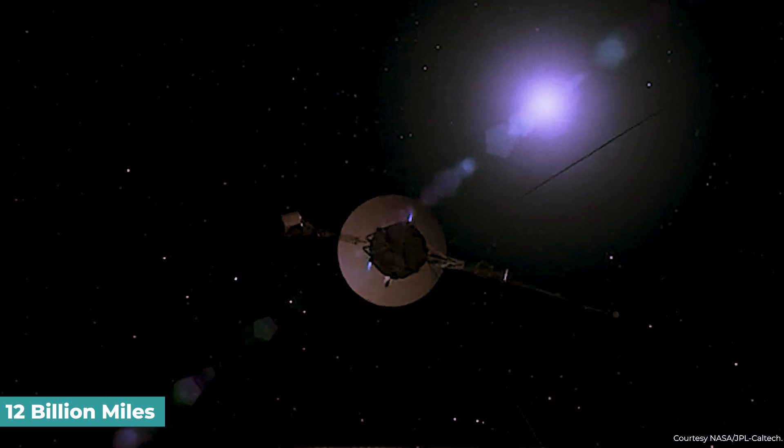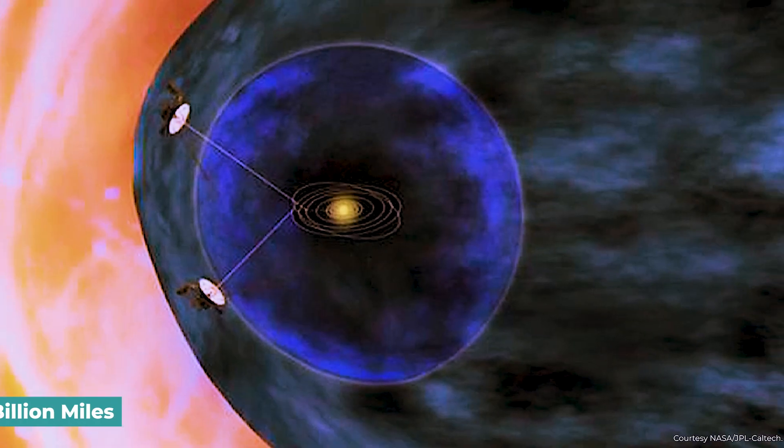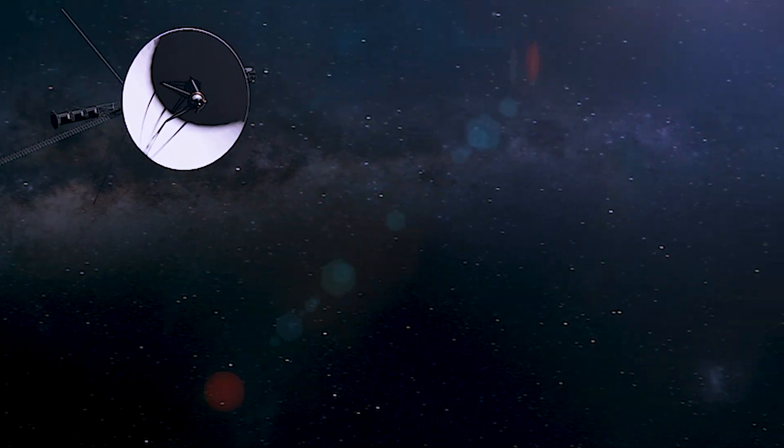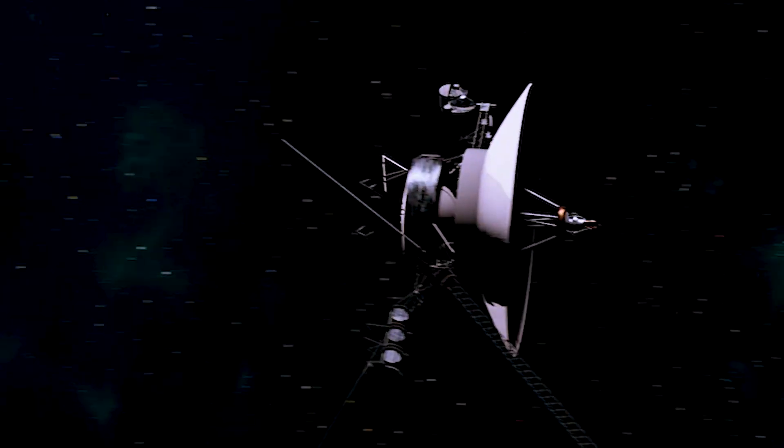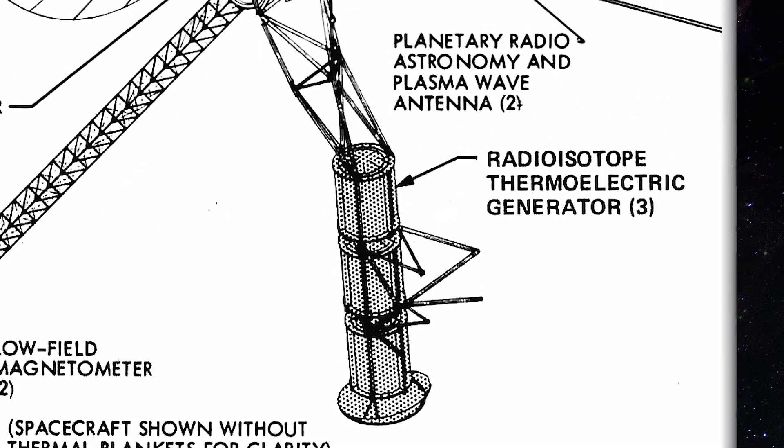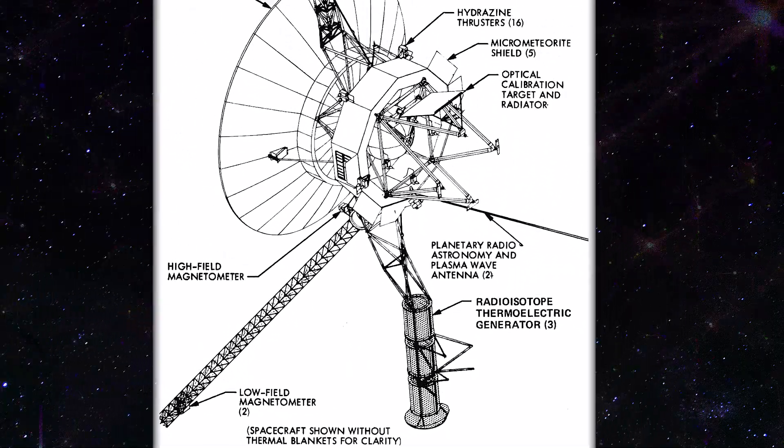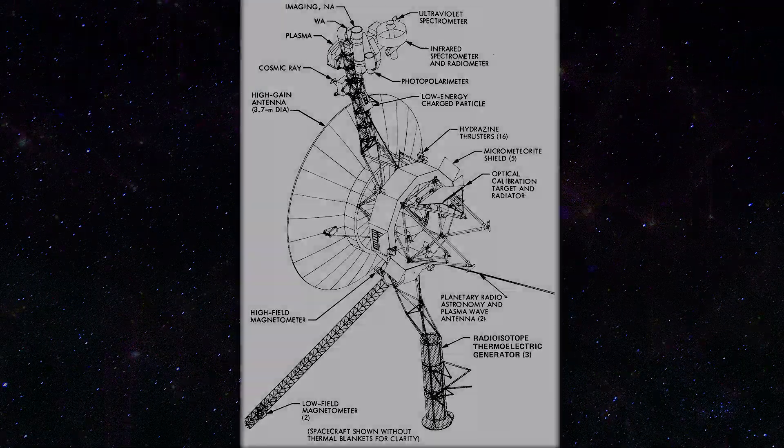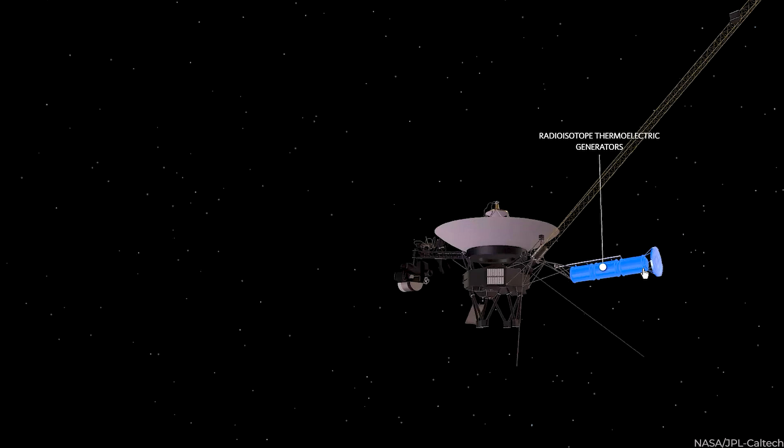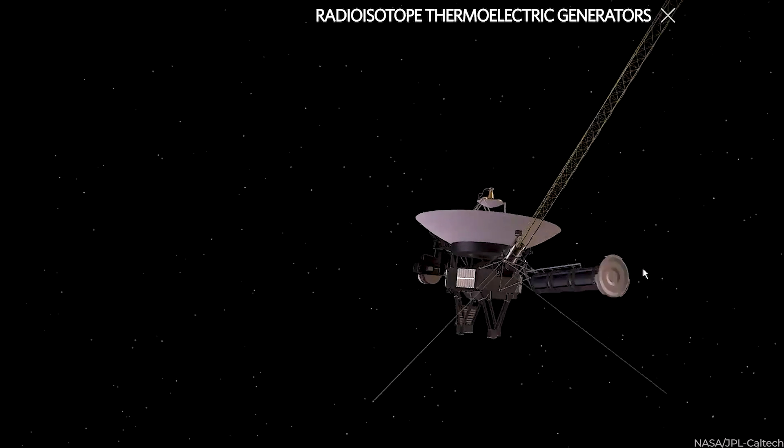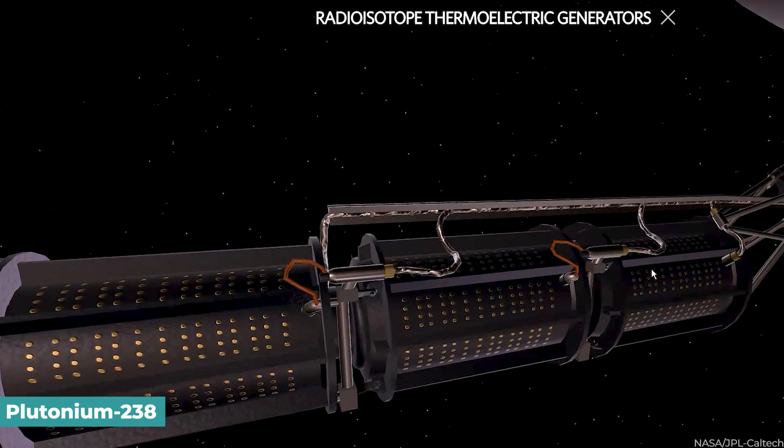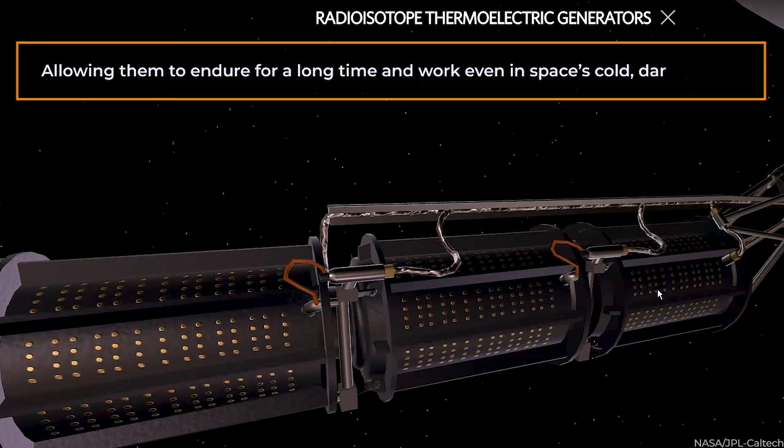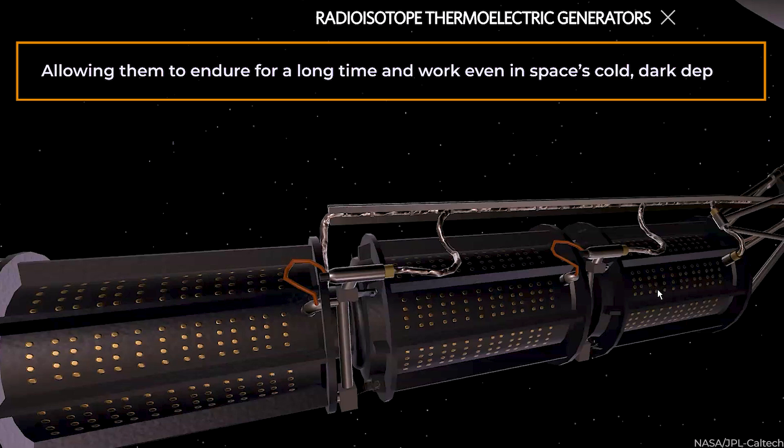Despite being nearly 12 billion miles apart, both are still operational today. Part of the reason they've outlasted previous probes is because of how they're fueled. Three plutonium dioxide radioisotope thermoelectric generators are used in the probes. These RTGs are a kind of nuclear battery, driven by heat from the natural radioactive decay of plutonium-238, allowing them to endure for a long time and work even in space's cold, dark depths.